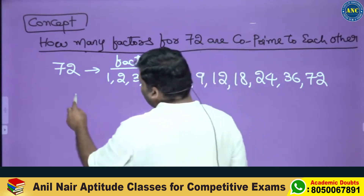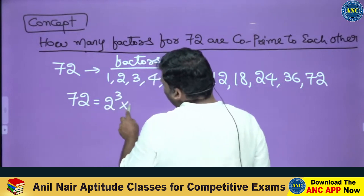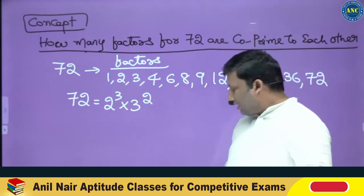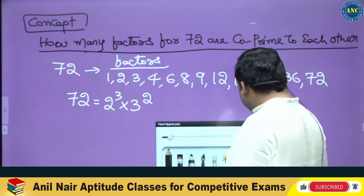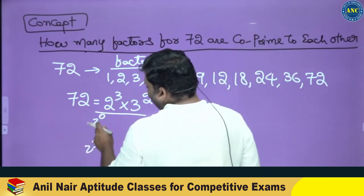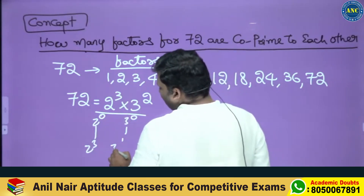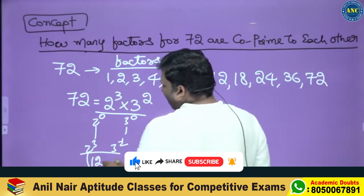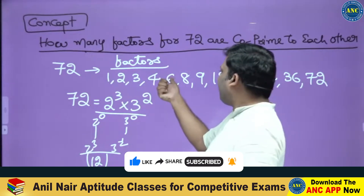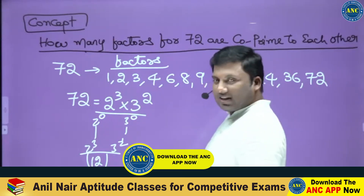Even if I miss out anything, I can find it out. 72 can be written as a power of prime bases: 2 power 3 into 3 square. This gives 2 power 0 to 2 power 3 — that's 4 cases — and 3 power 0 to 3 power 2, giving 4 times 3 = 12 total factors.